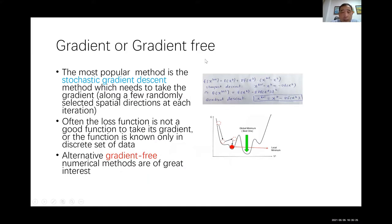The most standard and popular method to solve a very high-dimensional optimization problem in machine learning is the gradient descent method. Here f is your target function and you take a Taylor expansion around x_k, stopping after the gradient term. If you want to take steepest descent, you take the increment in x to be in the negative gradient of f direction.